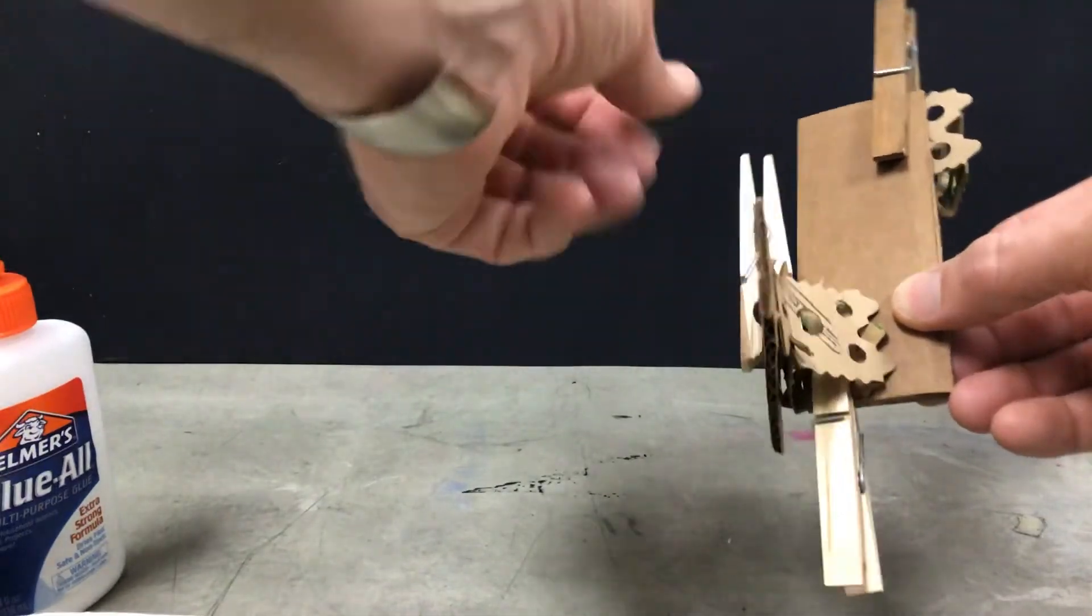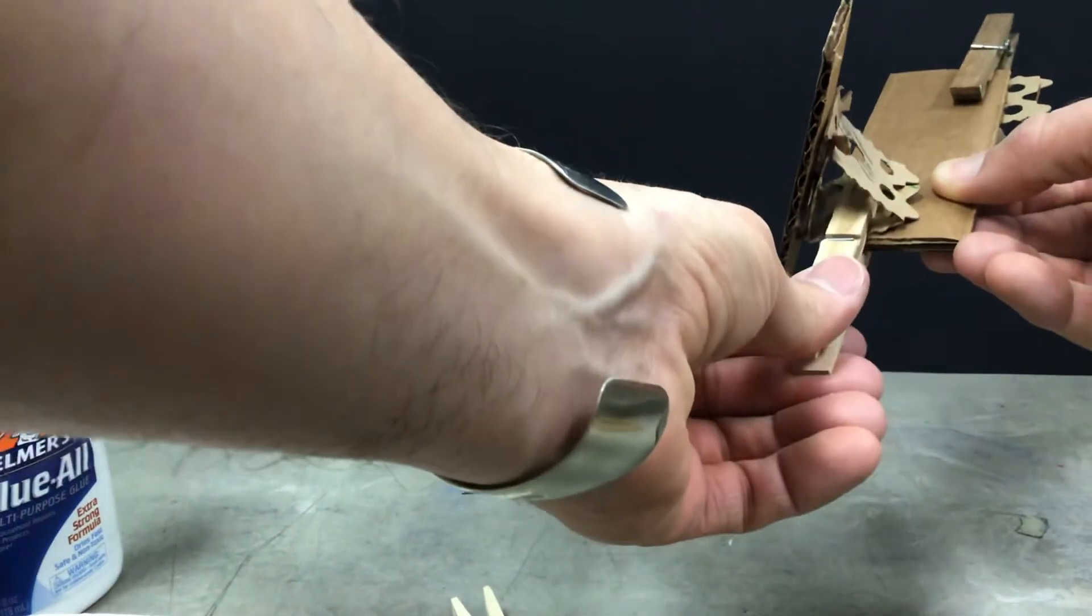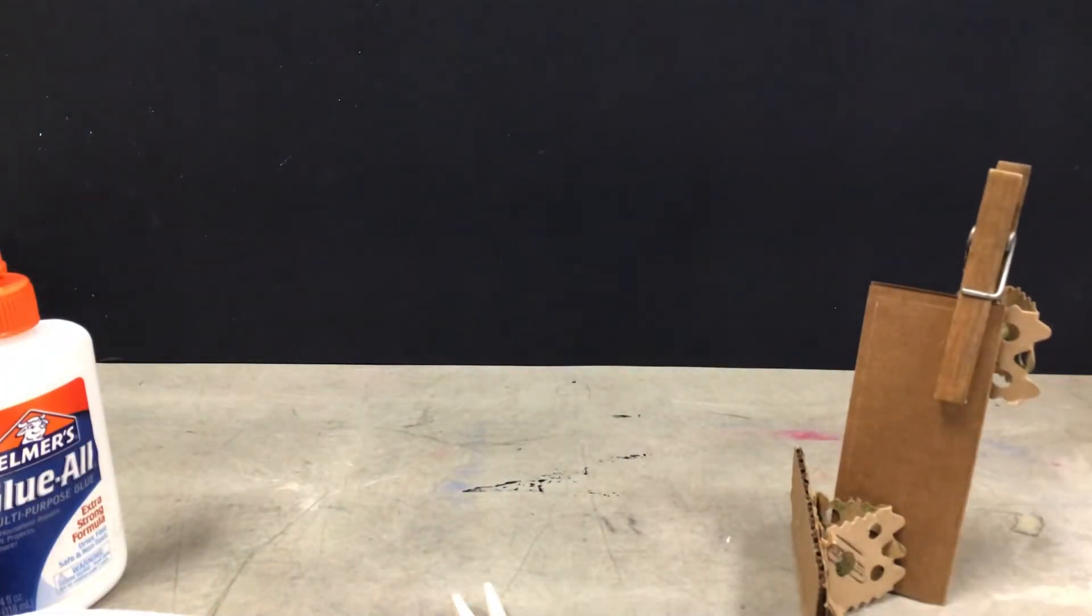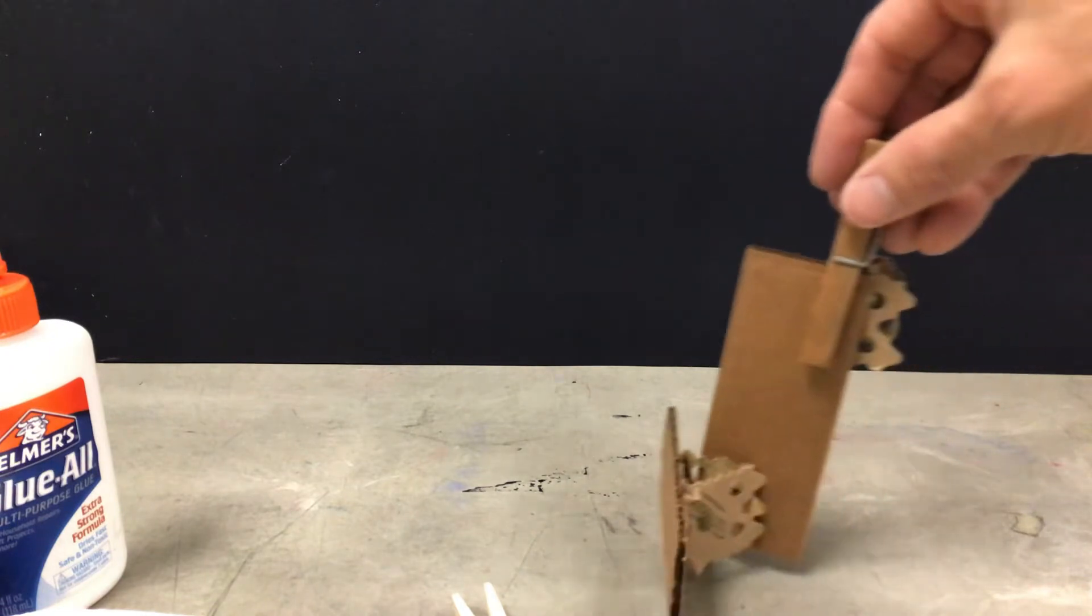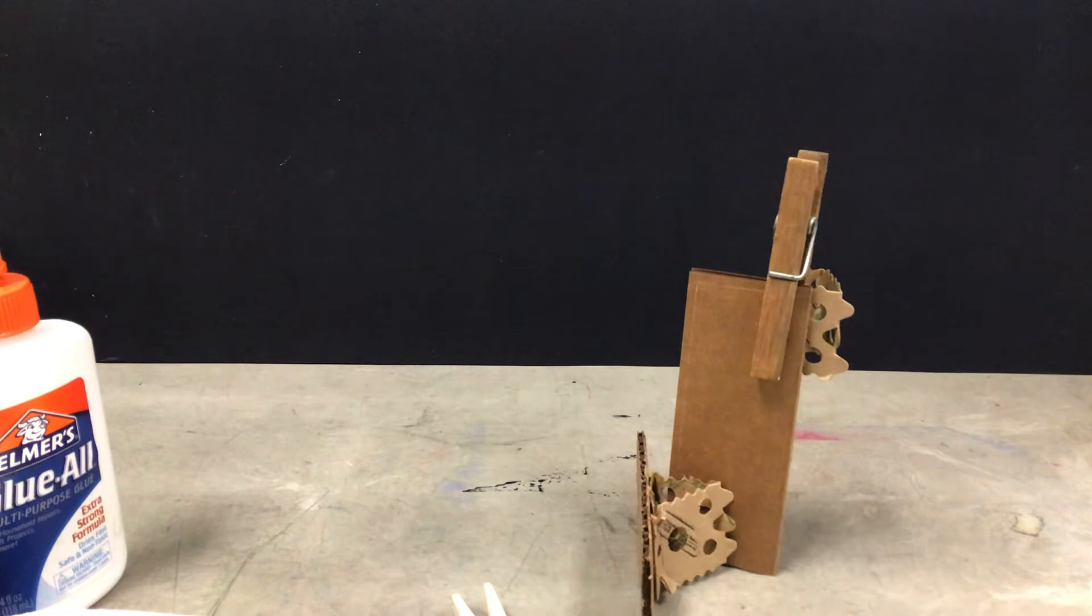Now since these have been on here while I've been working on that, it might be safe to go ahead and remove these because they've kind of done the job of holding that in place. I place this up here. Now that clothespin weighs more than the cardboard, so I need to think about that could make it so that it actually tips over. So I want to watch that and be careful not to let that happen.